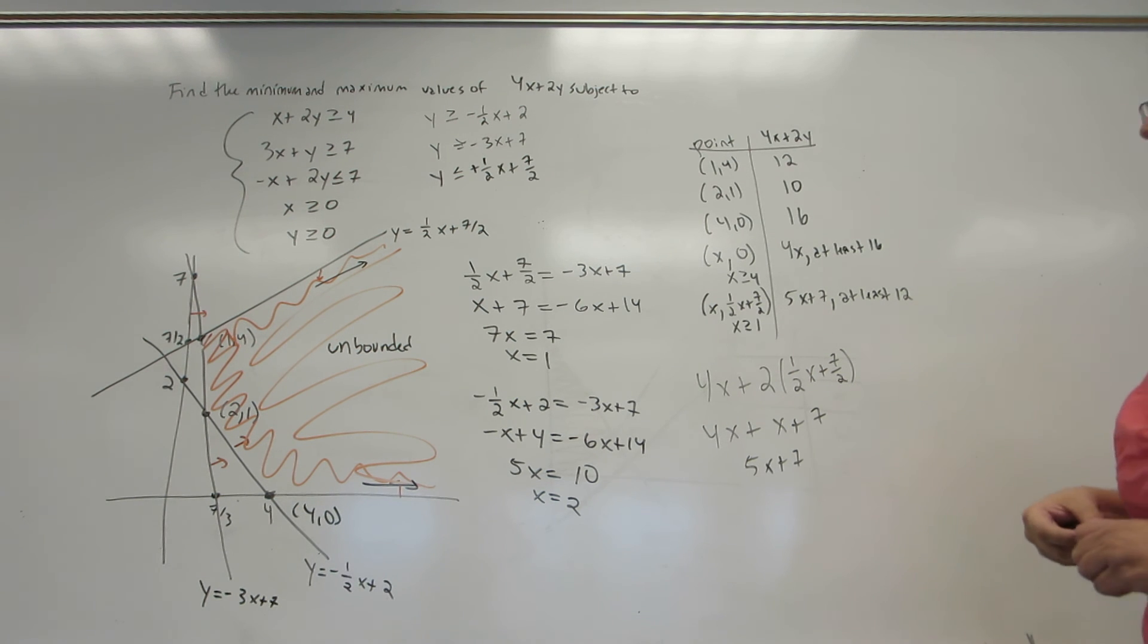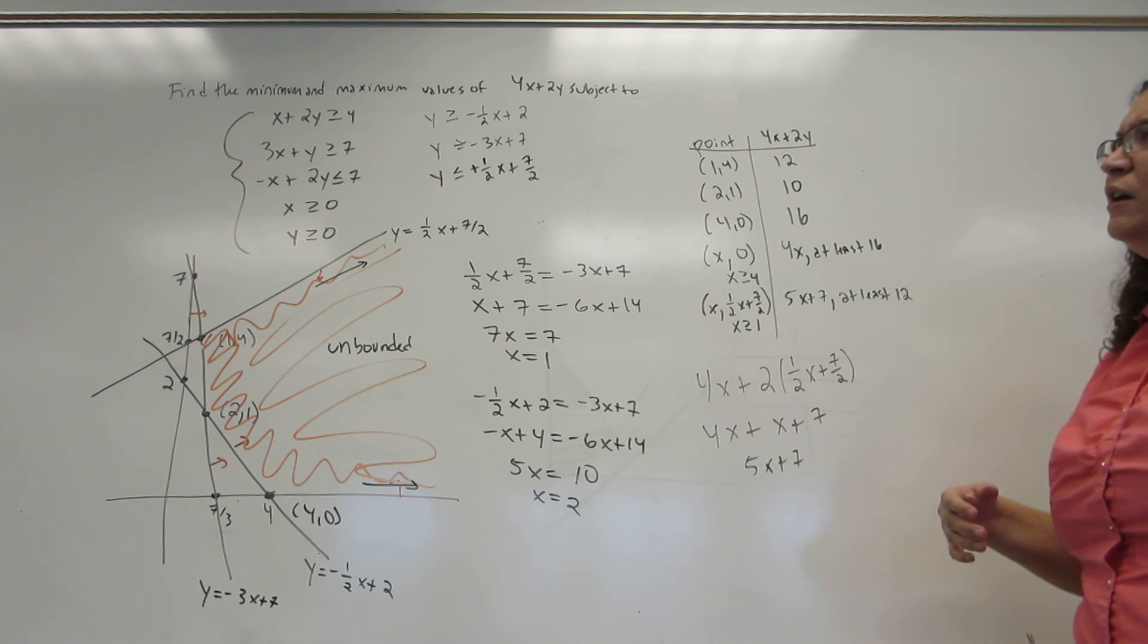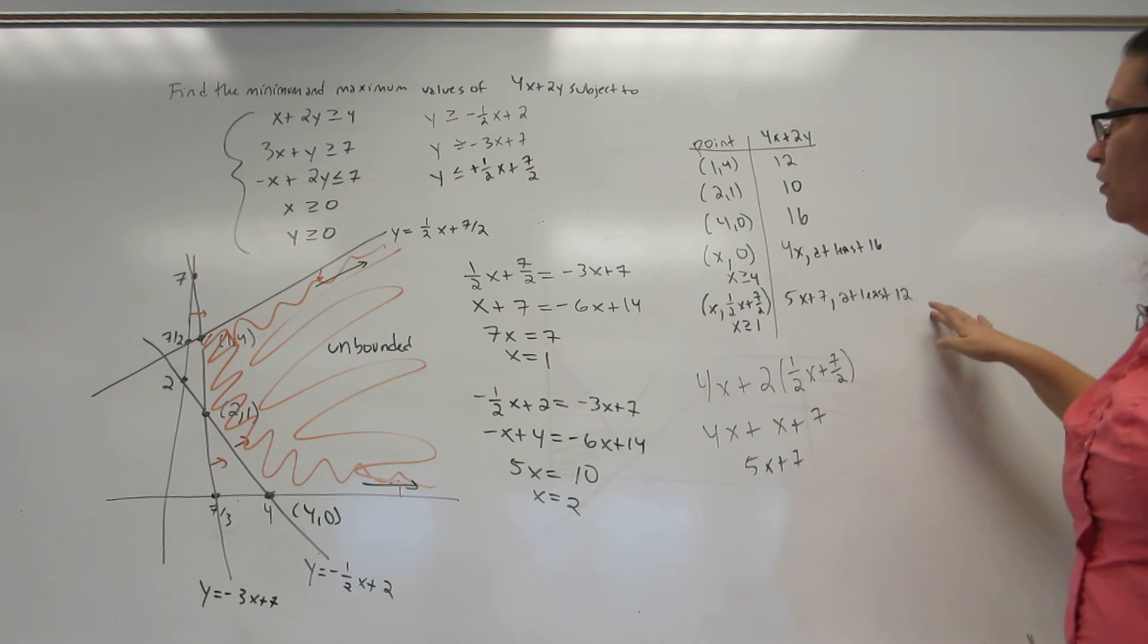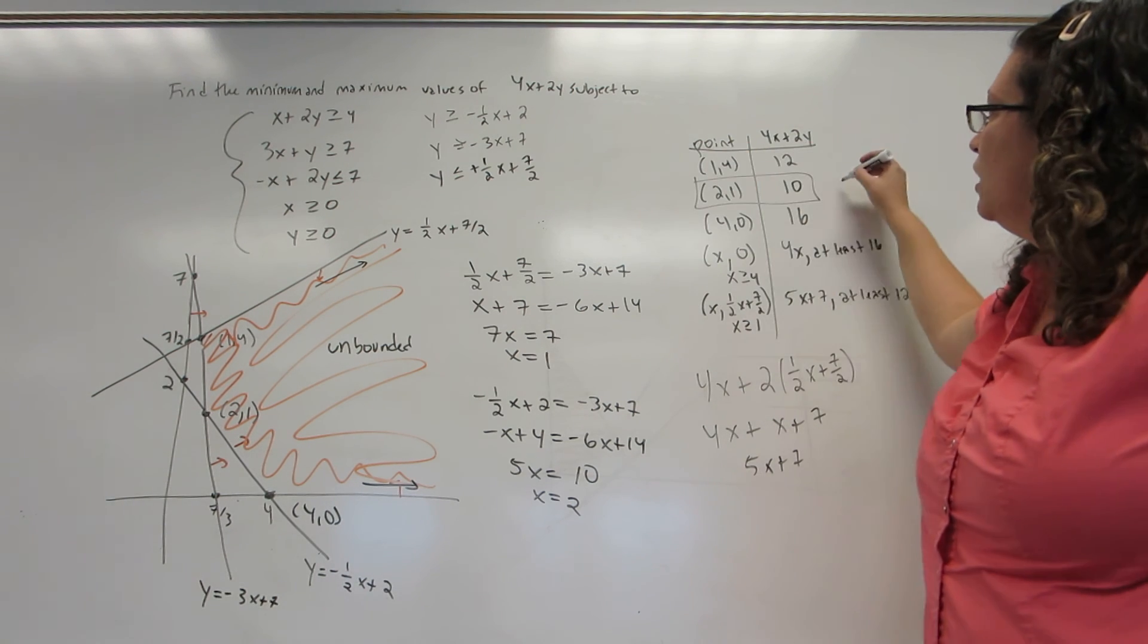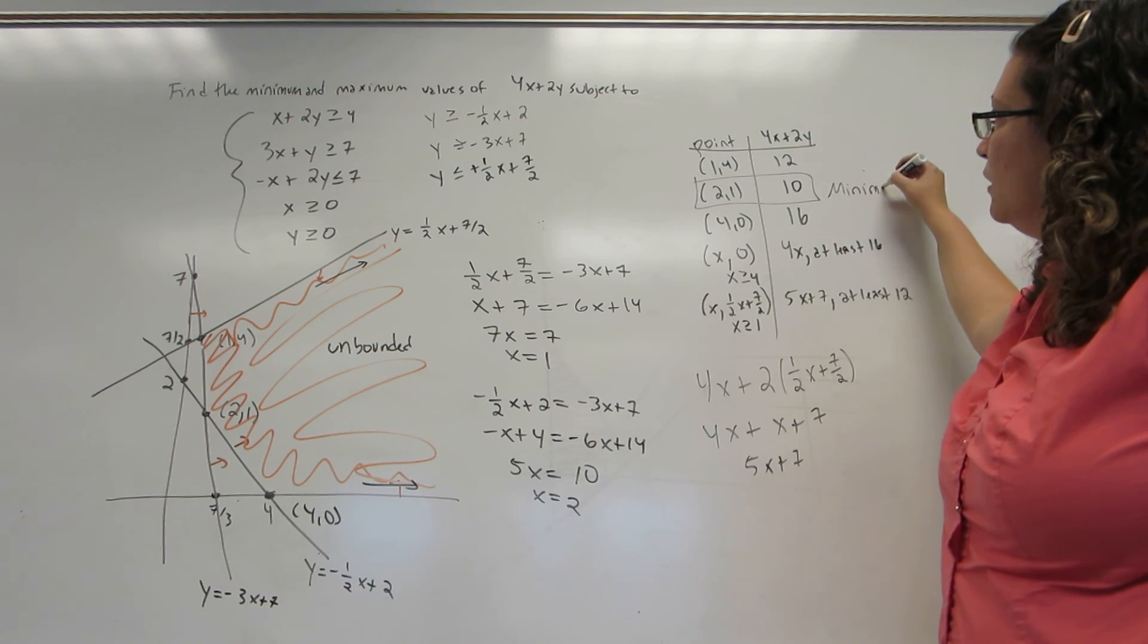Now I need to actually answer the question. So I look and I say, what is the minimum value on the right-hand side of my table? And the minimum is, of course, 10. So the point 2 comma 1 is my minimum.